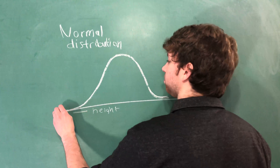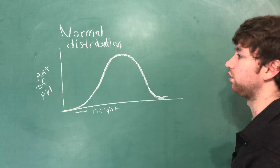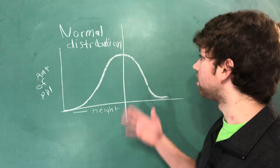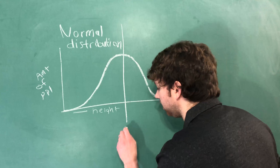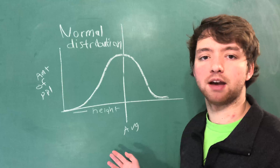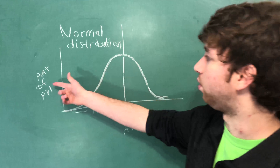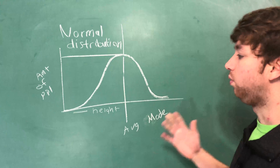So if we plotted this, the x-axis would be height and the y-axis would be the amount of people. The farther to the right, the taller you are; the higher up, the more people there are at that height. We can split it in half and that center point is going to be the average. In this situation it's also going to be the mode, because that's the highest point — meaning most of the people are going to be at the average.